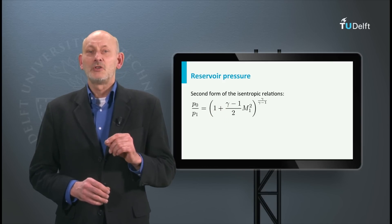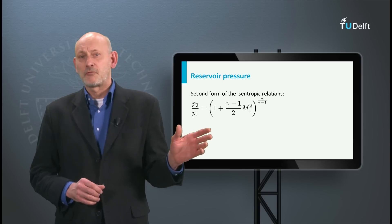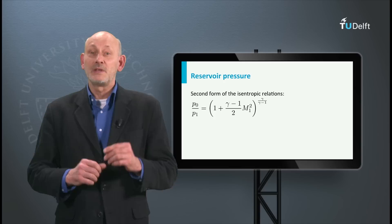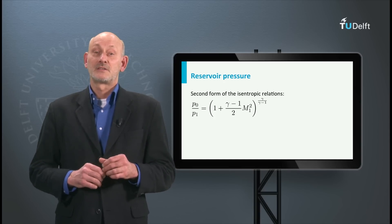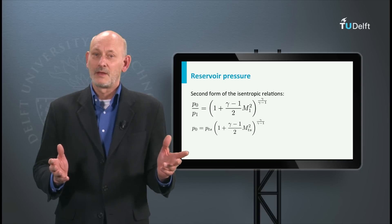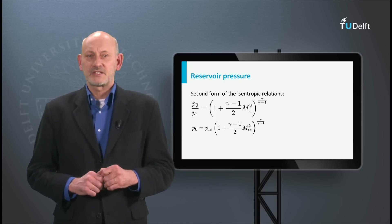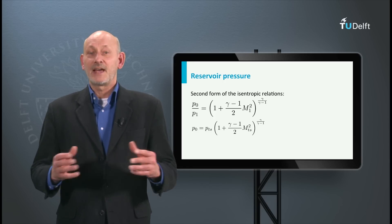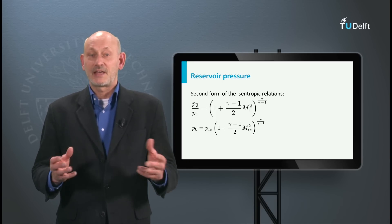Remember, we can use the second form between the reservoir and the throat, between the reservoir and the test section, but not between the throat and the test section, since in neither of these two stations the velocity is zero. The equation contains the reservoir pressure, the test section pressure, and the Mach number MTS, denoting the test section.